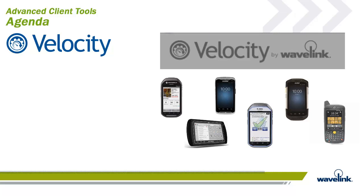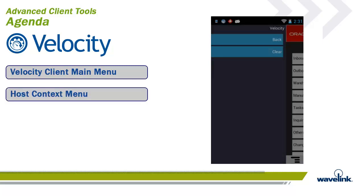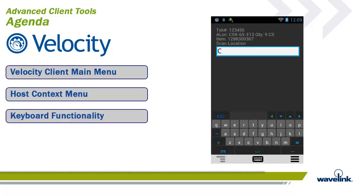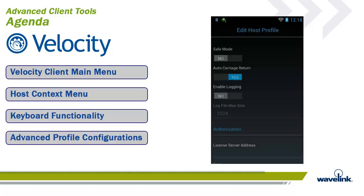To start, we'll take a look at the Velocity Client Main Menu. Next, we will look at the Host Context Menu. After that, we will look at how to swap keyboards if your screen has multiple keyboards configured. And last, we will wade through the myriad of configuration options available per host connection.